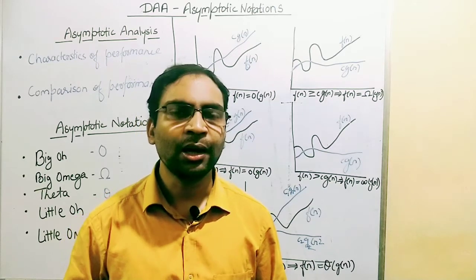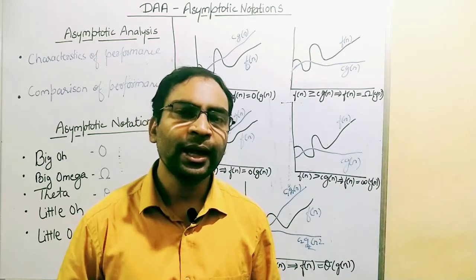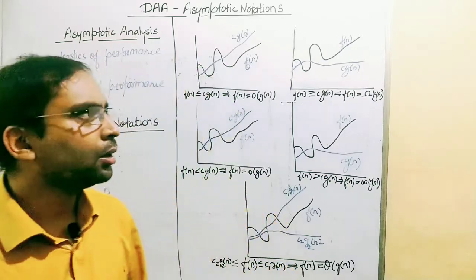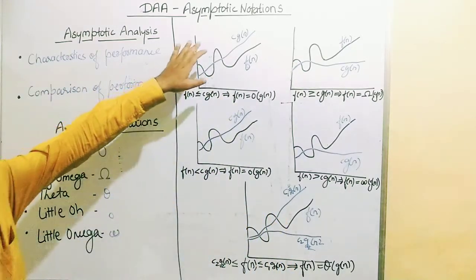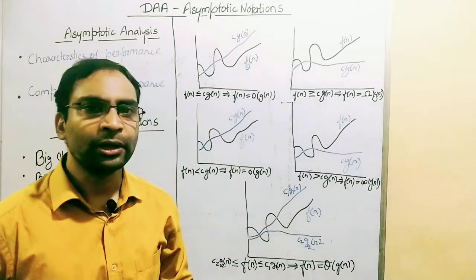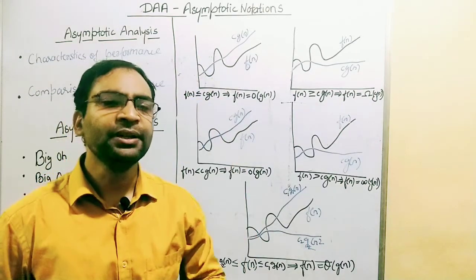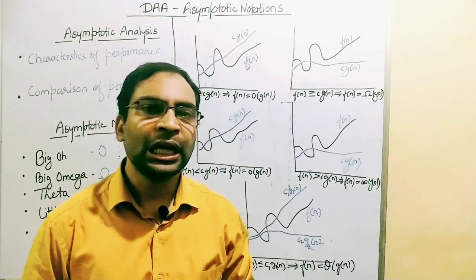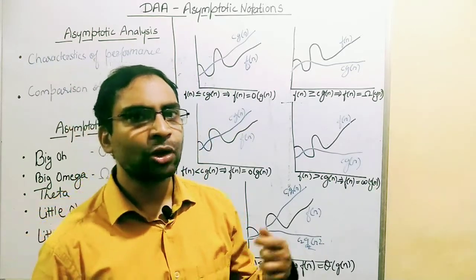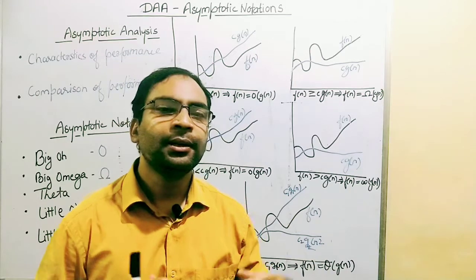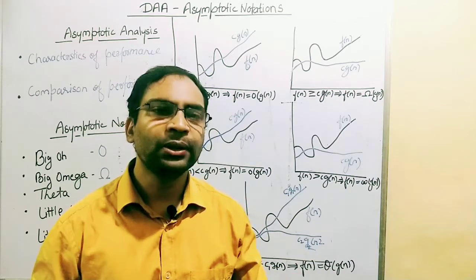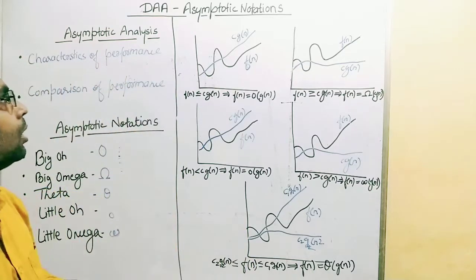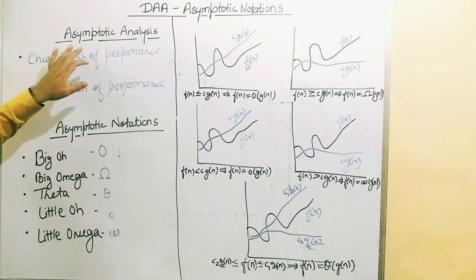Welcome to the next lecture of DAH, Design and Analysis of Algorithm. In today's lecture, we will talk about asymptotic notations and asymptotic analysis. As in the previous lecture, we had seen that growth of function, how it is related with the asymptotic analysis and time complexity, how all these things are related to each other.